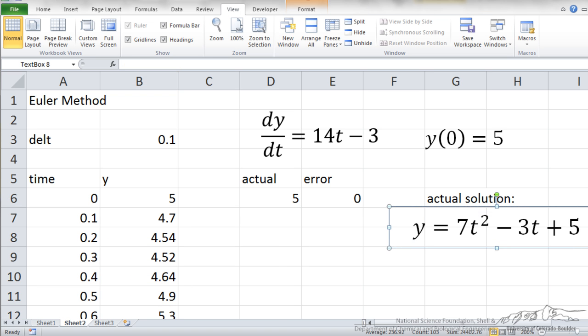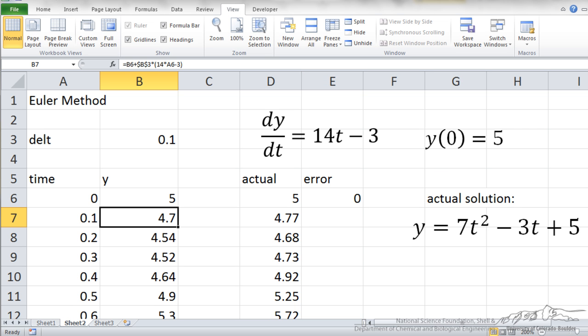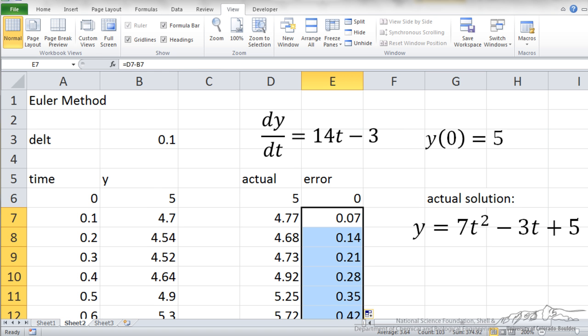I could compare to the actual solution. I have set up a column here of the actual values based upon our actual solution from calculus, and now I can put in an error, which is just the difference between the actual and our estimated using the Euler method.